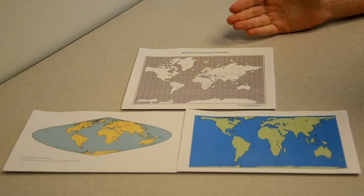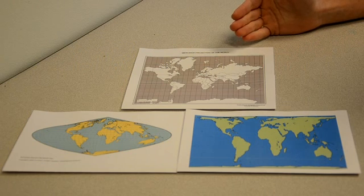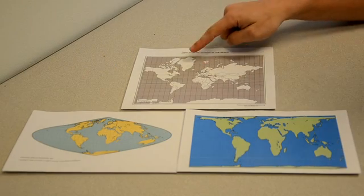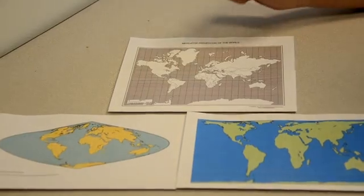The most common type of map, which you've probably seen on Google Maps, is the Mercator projection. Here, you can see that Africa and Greenland appear to be the same size, when in fact,